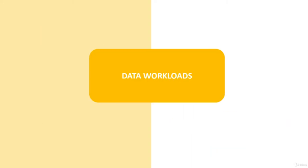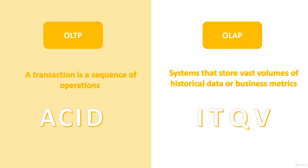Each type of data is used to perform a specific type of workload. Relational type is mainly used for transactional processing known as OLTP, where a transaction is a sequence of operations that all must be completed to make changes permanent, or in case of an error, all changes are discarded.